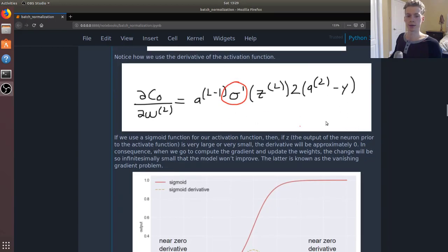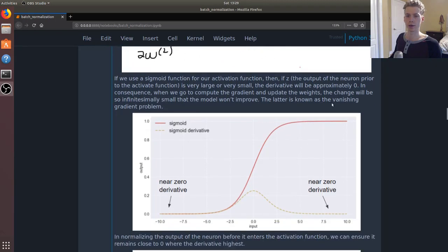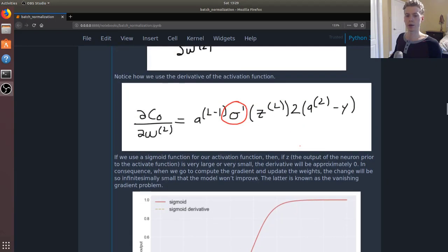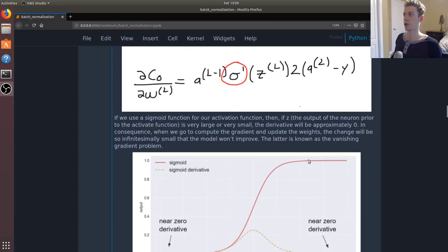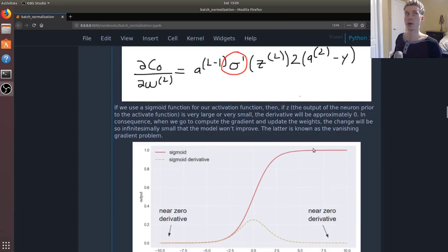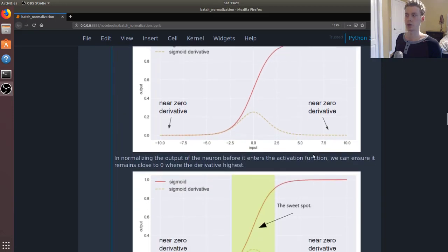This is also called the vanishing gradient problem. As it propagates backwards, it will end up calculating this multiple times, and if it's multiplying it by a very small number, then our model is no longer minimizing the loss function. It hardly changes throughout the different epochs.